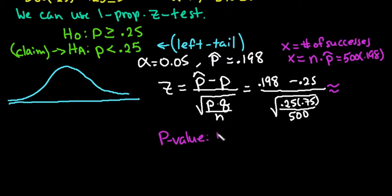So our P value, remember, is the probability of getting our P hat that is less than 0.198 if the null were actually true. This is proportions.